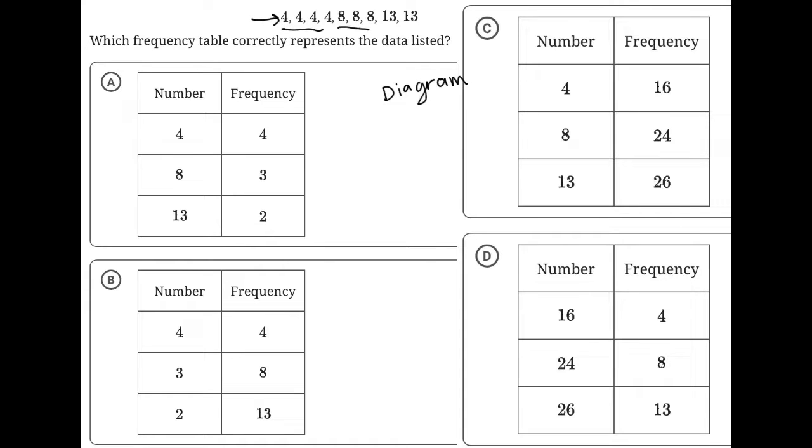We have four fours, three eights, and two thirteens. The question asks which frequency table correctly represents the data listed. So we just have to find the answer that matches the frequencies that we have here.